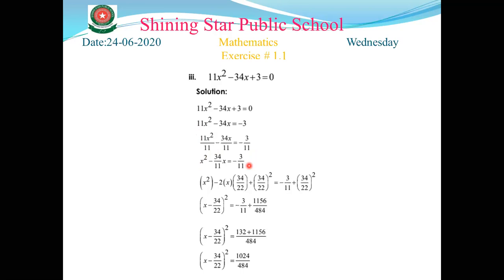In the third step, b is 34/11. Half of b is 17/11 (or equivalently 34/22). You add (17/11)² to both the left-hand side and right-hand side. That completes the third step.